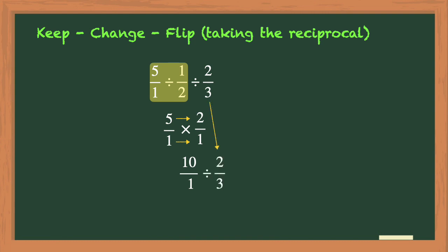So now you need to repeat the keep change flip process again. You will keep 10 over 1, change the division to multiplication, and flip the second fraction of 2/3 to 3 over 2. Now you can multiply the numerators, 10 times 3 is 30, and then the denominators, 1 times 2 is 2.